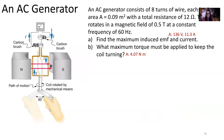Let's consider a problem where we figure out the induced EMF and current of a generator. An AC generator consists of 8 turns of wire, each with an area of 0.09 meters squared, with a total resistance of 12 ohms. The loop rotates in a magnetic field of 0.5 teslas at a constant frequency of 60 hertz. Find the maximum induced EMF and current, and the maximum torque that must be applied to keep the coil turning.